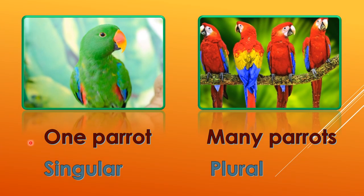Look at here children. One parrot — singular. Singular means one, so one parrot is singular. Many parrots — plural. Because plural means many. So many parrots — plural. Singular means only one, and plural means many.